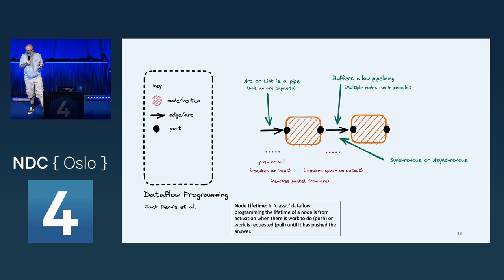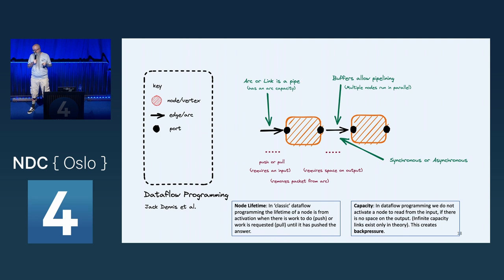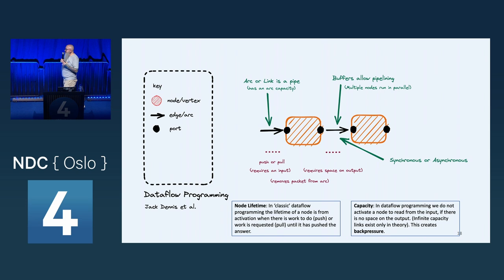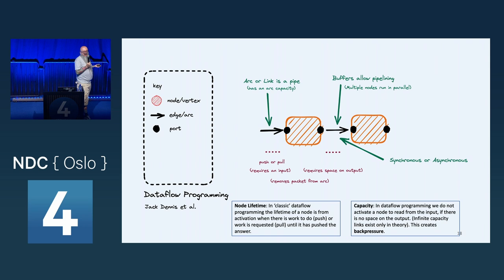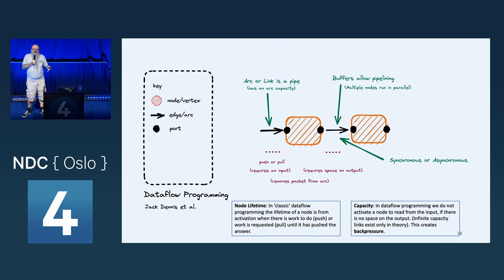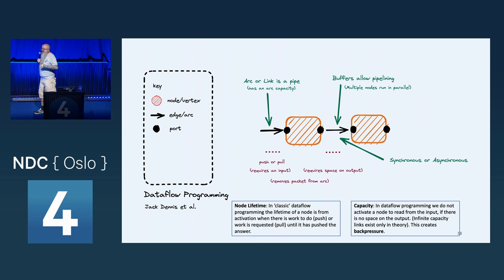In the classic model, a node's lifetime is simply: there's work waiting to be done. If there's no capacity on the output, we don't activate a node to read input — this effectively acts as a form of back pressure. It says: if the downstream is at capacity, potentially because it's working much slower than I am, don't read new items from the input. Just leave them where they are. That creates back pressure, which stops us from filling up the buffers too much if we are going too fast.